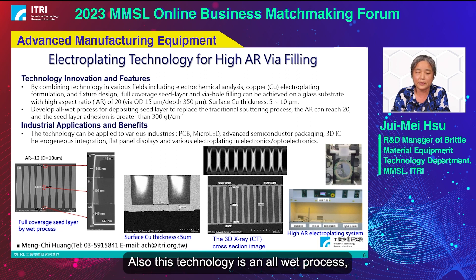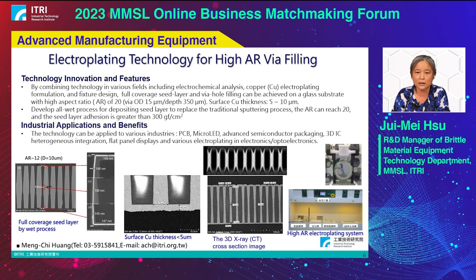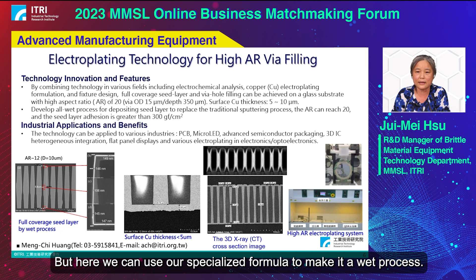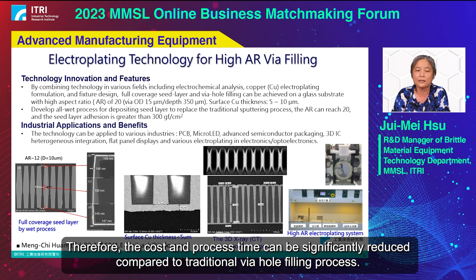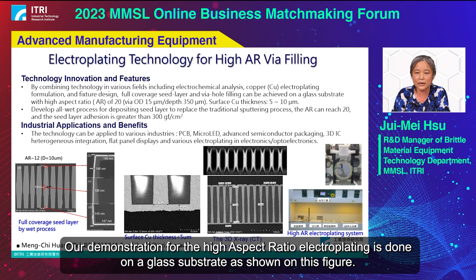Also, this technology is an all-wet process. Not only is our plating process a wet process, but the seeding layer deposition is also done in a wet process. The seeding layer is traditionally done by sputtering, but here we can use our specialized formula to make it a wet process. Therefore, the cost and process time can be significantly reduced compared to traditional via hole filling processes. Our demonstration for high aspect ratio electroplating is done on a glass substrate, as shown in the figure.